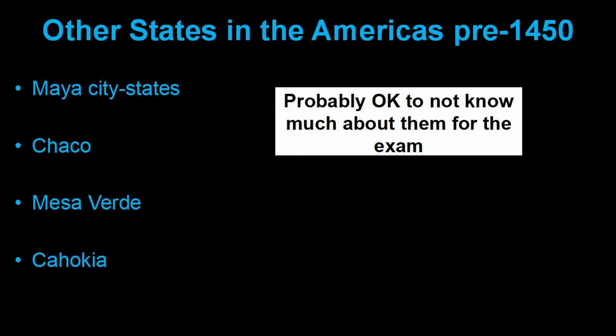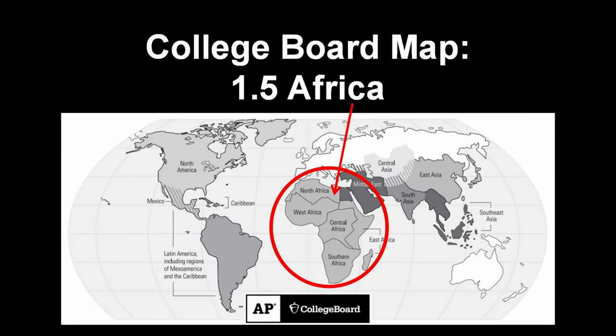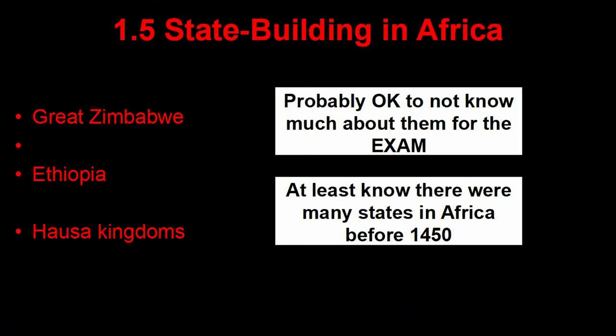These other states are honorable mentions — you should know they are all states with their own accomplishments. 1.5 is also a token unit; it's not a big part of the exam, and superficial knowledge is probably okay. The College Board wants you to understand that there were significant states in Africa before 1450. Mali and the Swahili Coast city-states are hugely important, but the College Board is saving them for Unit 2 because they're related to the spread of Islam and trade routes. Unit 1 is more looking at the pre-Islamic states in Africa.